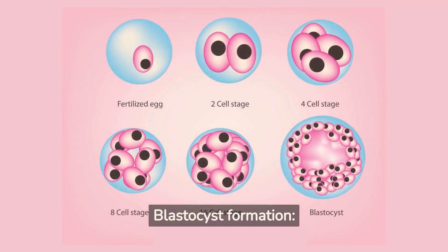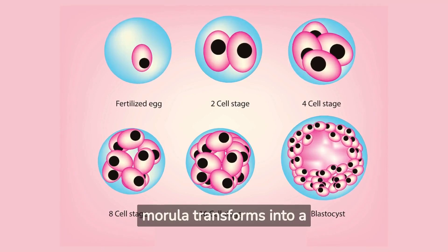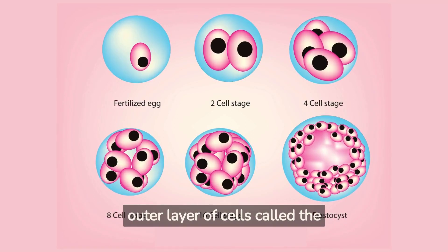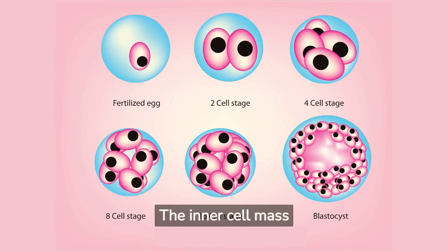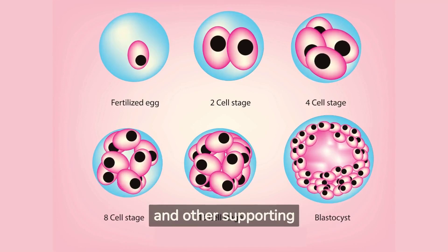Blastocyst Formation. Around 5 to 7 days after fertilization, the morula transforms into a blastocyst, which is a fluid-filled sphere consisting of an inner cell mass and an outer layer of cells called the trophoblast. The inner cell mass will eventually develop into the embryo, while the trophoblast will form the placenta and other supporting structures.